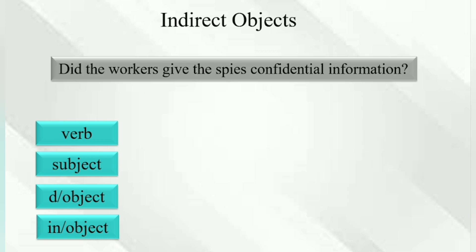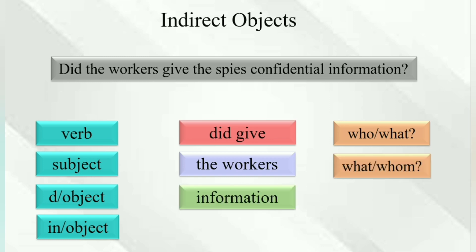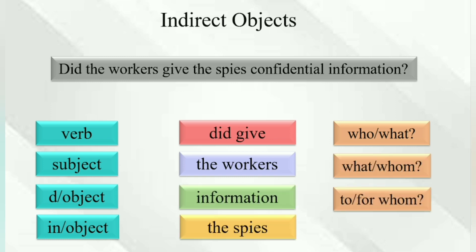'Did the workers give the spies confidential information?' Did give — who did give? The workers. The workers did give what? Information. Information to whom? The spies. So 'the spies' is the indirect object.